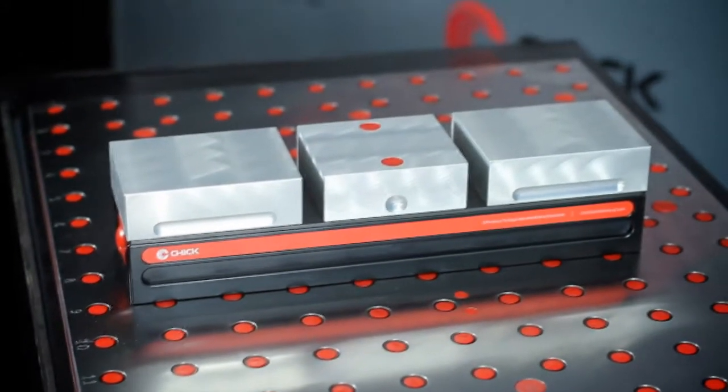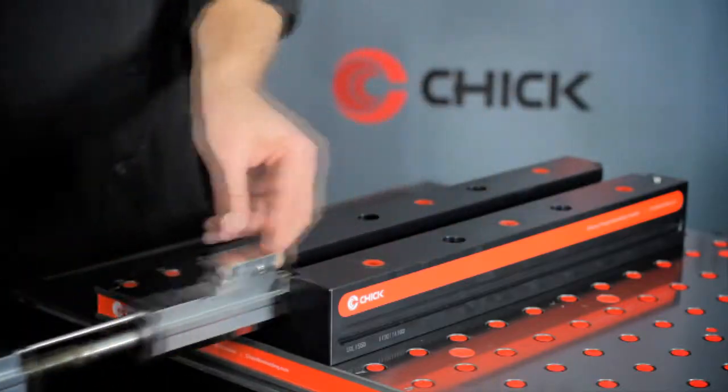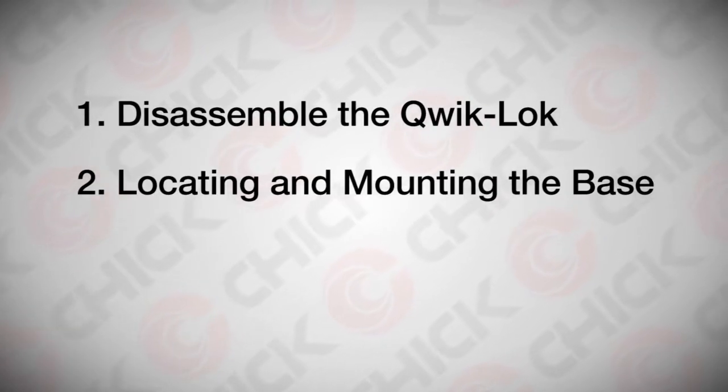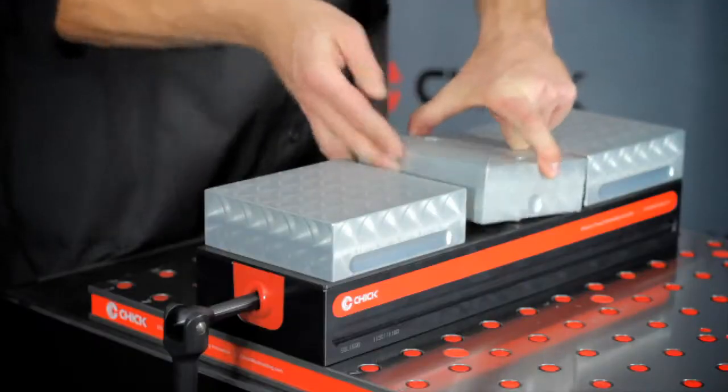It's as simple as one, two, three. 1. Disassemble the Quick-Lock, accessing the mounting holes in the base. 2. Install the recommended round and diamond pins for repeatable location and secure the base. 3. Reassemble the Quick-Lock.